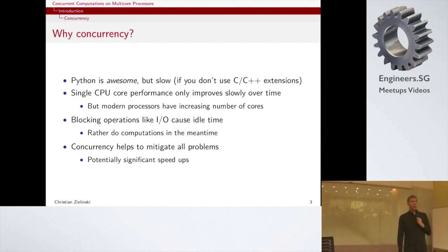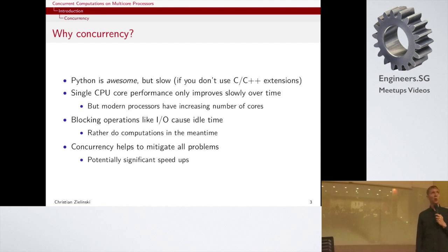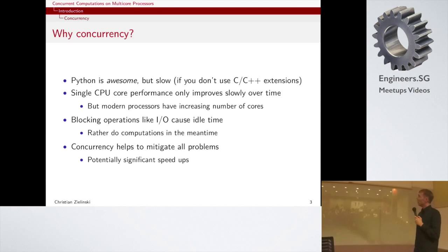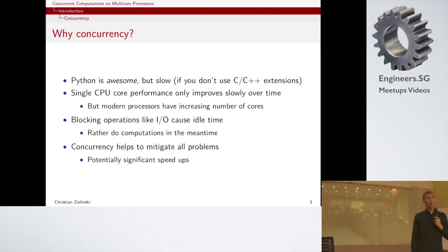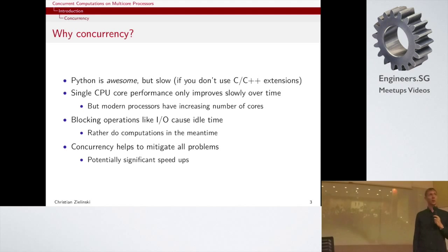The question is: why do we actually want to do concurrent computations? There are a few key observations which some of you probably have seen in your own programs before. First of all, Python is pretty awesome, but we also know its limitations. One of the problems of Python is certainly it's not the fastest language, at least if you don't use C extensions.